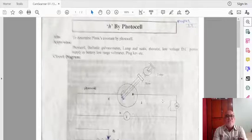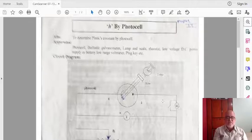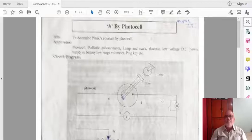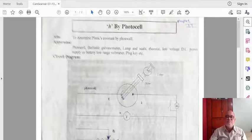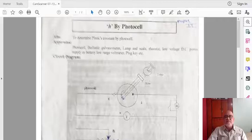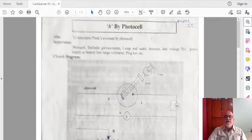See, the apparatus required for this photocell is photocell, pixel. In this circuit diagram, you can see the photocell. This is a photocell. In this evacuated glass tube, this is a half semi-cylindrical part. It is nothing but a photocell. This acts as a cathode. At the same time, this acts as anode. Lamp and scale arrangement is there.